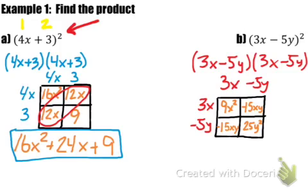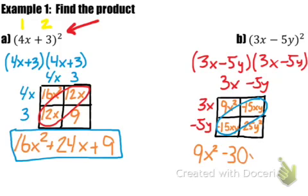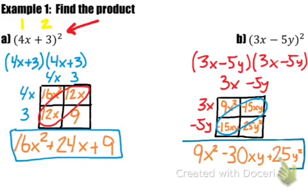So we're going to write out our products along the bottom. We have 9x squared. We have two like terms — both have an xy in it, both raised to the first power — so negative 15xy plus negative 15xy gives us negative 30xy. And then we are left with a positive 25y squared, giving us plus 25y squared. And then we are done.